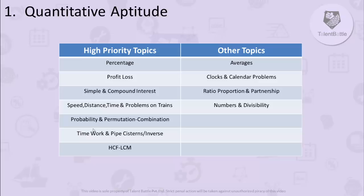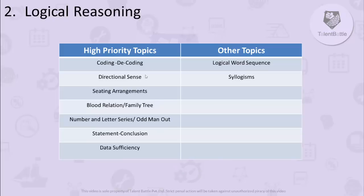First cover the high priority topics, then go to the other topics. For logical reasoning, the high priority topics are: coding-decoding, direction sense, sitting arrangements, blood relations (family tree), number series, letter series and odd-man-out, statement-conclusion, and data sufficiency. There are also problems on syllogisms and logical word sequence. Follow the same strategy — try to solve or find at least 5 to 6 types of problems in each topic.